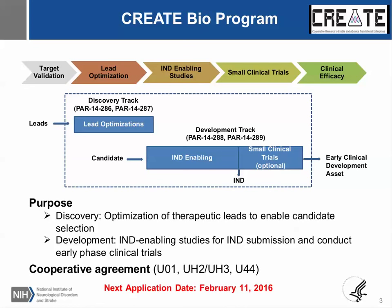The program has two tracks: the discovery track and the development track. The discovery track starts with leads and ends with a well-characterized candidate — for example, a monoclonal antibody, viral vector, or peptide that has demonstrated efficacy in relevant animal models. The development track starts with a candidate and funds IND-enabling studies leading to an IND application to the FDA or even small clinical trials. These are cooperative agreement mechanisms through U44 for SBIR, U01 for discovery, and UH2/UH3 for the development track.